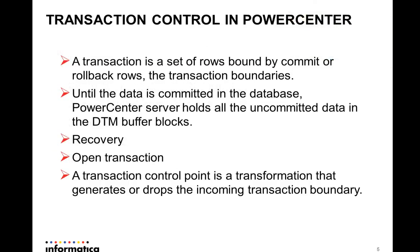Transaction control in Power Center: Power Center lets you define transactions that the integration service uses to commit and rollback data at the target. A transaction is a set of rows bound by commit or rollback rows which forms the transaction boundaries. The reason we need transaction control in Informatica is that, until the data is committed in the database, the Power Center server holds all uncommitted data in the DTM buffer blocks, and we need to control when to commit the data to the target. Also, from the Informatica recovery perspective, this is important as we need to avoid reprocessing already-processed data within Power Center.